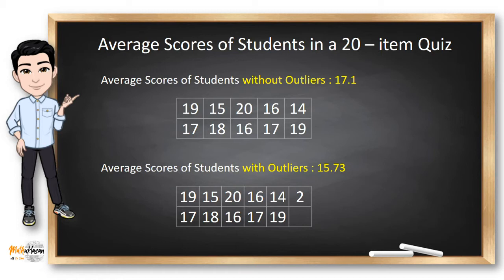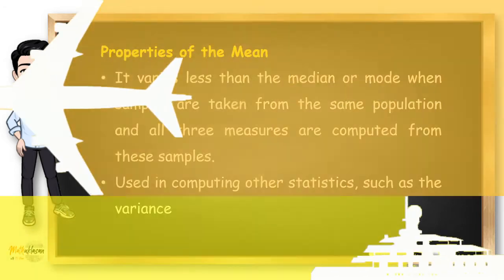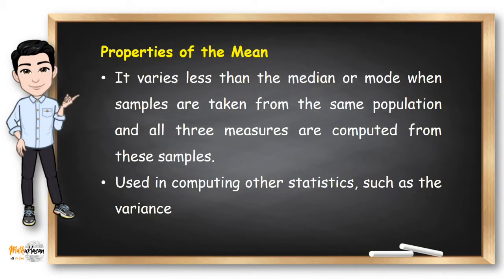However, there are no strict statistical rules for identifying outliers because it depends on the subject area knowledge and the understanding of the data collection process. The mean also varies less than the median or mode when samples are taken from the same population and all three measures are computed from these samples. The mean is also used for computing other statistics such as the variance.